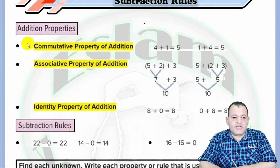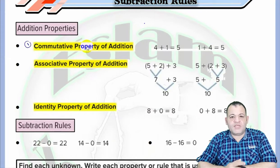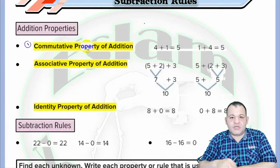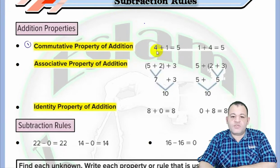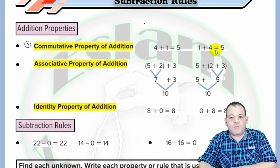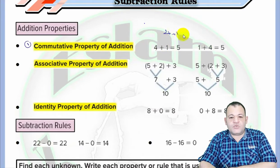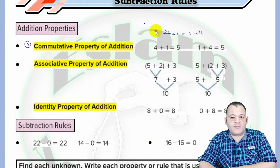The first property we have is defined by the commutative property. In this property, if you change the order of the numbers inside the addition operation, you will find the same result. For example, 4 plus 1 is the same as 1 plus 4. So 4 plus 1 equals 1 plus 4, and this is the commutative property.